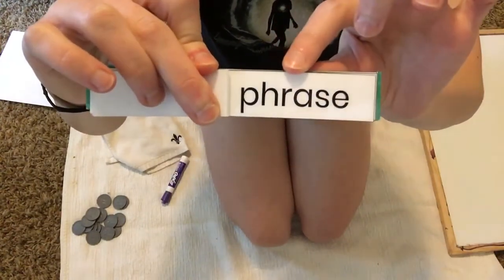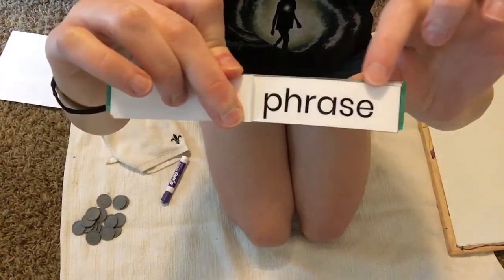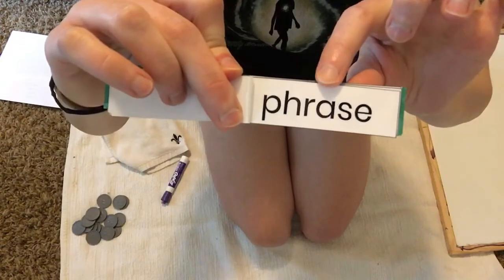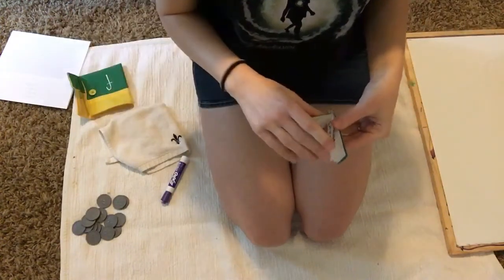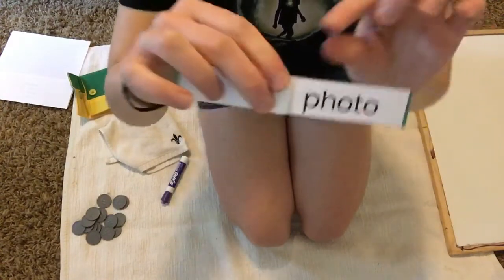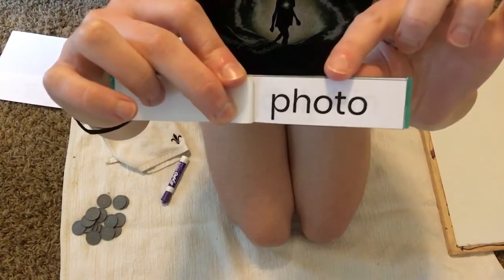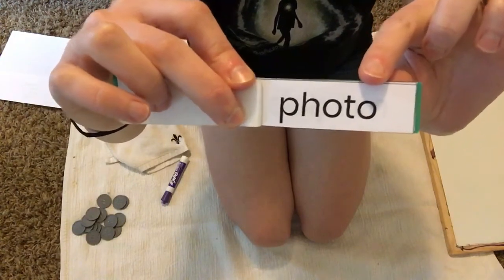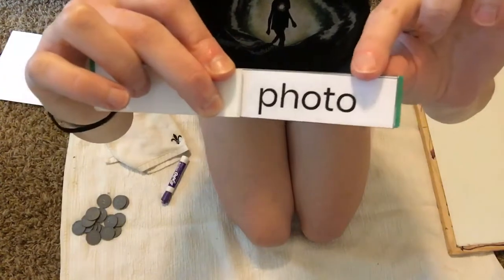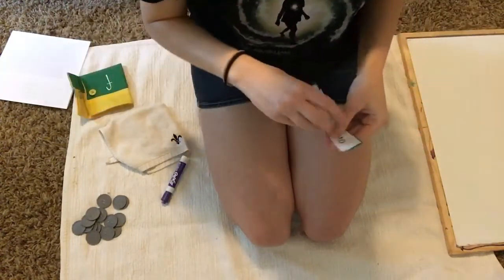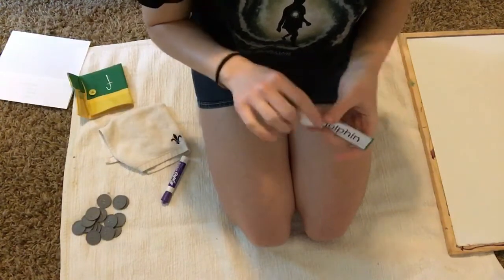Phrase. This is magic E making the A say its name. Phrase. Photo. In this word these O's are saying their name without the magic E. Strange but true. Sometimes that happens.